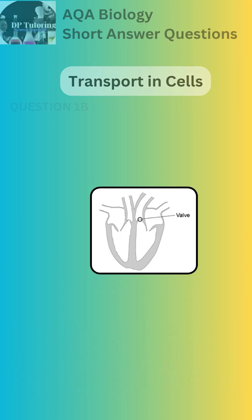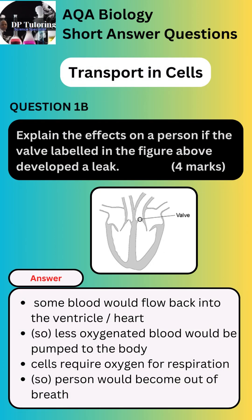The answer for Part B to gain 4 marks: 1. If the valve is damaged and develops a leak, then some blood would flow back into the ventricle or heart. 2. If this happens, then less oxygenated blood will be pumped into the body.